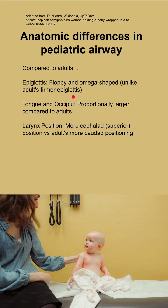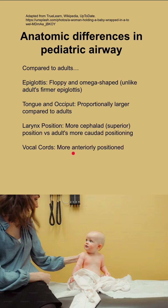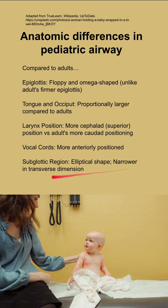The larynx is more cephalad or superior compared to an adult's more caudal or inferior positioned larynx. The vocal cords in kids are more anteriorly positioned, and the subglottic region is elliptical in shape and narrower in the transverse dimension.